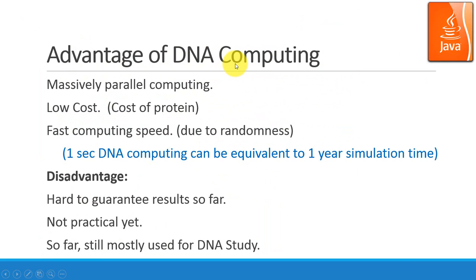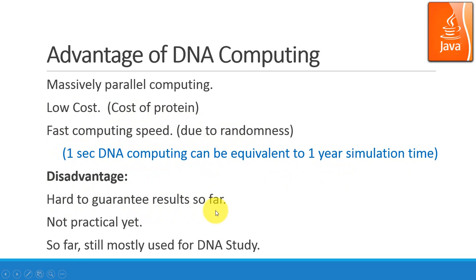The advantage of DNA computing is that it can do massively parallel computing at low cost — just the cost of some proteins — and fast computing speed due to randomness: you just shake the DNA and it produces results. One second of DNA computing can be equivalent to one year of simulation time. The disadvantage is that it's hard to guarantee results so far, and it's not practical yet because of limitations in the reader, input, and many other factors, though there have been some early successes proving its capability.